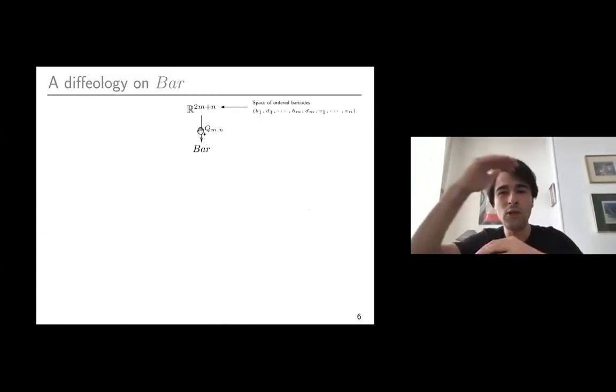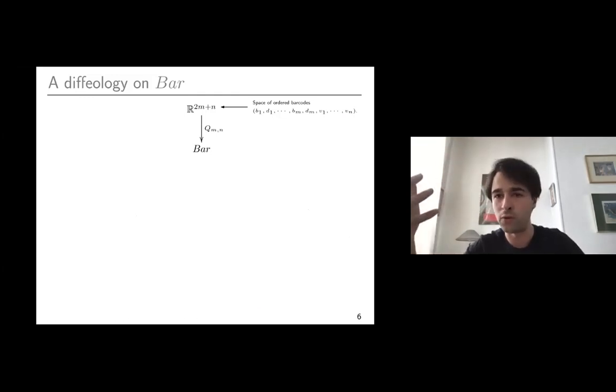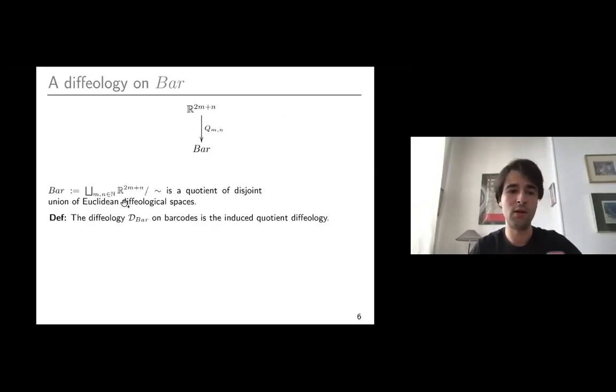Our goal is to find a Diffeology on barcodes. We start by observing that there are canonical bundles on top of barcodes. These spaces R to the power of 2M plus N should be thought of as spaces of ordered barcodes. Their elements are just orderings of first M finite bars, and the last N entries are parametrizing infinite intervals. You just have a quotient map forgetting the order and shuffling everything to barcodes. Using this, we can present barcodes as the following co-limit in sets: the disjoint union of these ordered spaces modulo the equivalence relation that identifies different ordering and trivializes length zero bars. Because we're doing disjoint union of Euclidean Diffeological spaces and quotient, we have an induced quotient Diffeology on barcodes.